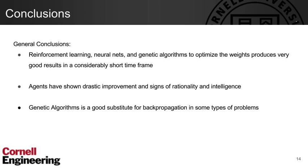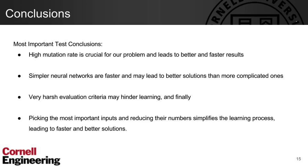Some general conclusions: reinforcement learning with neural nets and genetic algorithms turned out to be a perfect solution for our problem. Agents showed drastic improvement in signs of rationality and intelligence. We can conclude that genetic algorithms are a good substitute for backpropagation in some types of problems, including artificial life simulation. A high mutation rate was very important for escaping local maxima, unlike crossover which is only effective once a good solution has been found. Counter-intuitively, a simple neural network is faster at solving problems than more complex ones, and also leads to better solutions. Harsh evaluation criteria made it almost impossible to find solutions. And when we pick the most important inputs and remove unimportant or redundant ones, we get faster and better solutions.